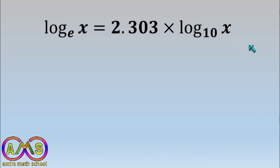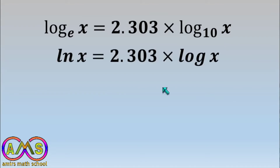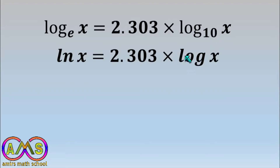This is our relation — with it we relate the natural logarithm with the common logarithm. Another way to write this formula is: ln x equals 2.303 times log x. When the base of the logarithm is e, we write it as ln x, and when the base is 10 we write it as log x.